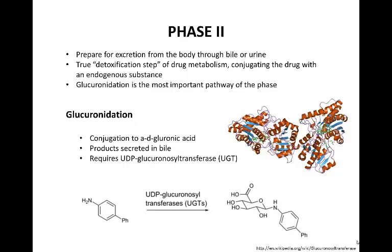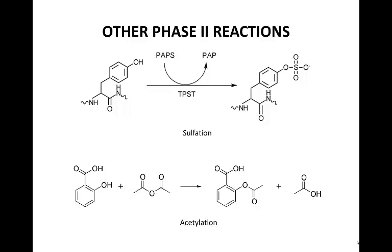Phase 2 reactions prepare the pharmaceutical compound for excretion from the body, mostly through bile or urine. It is considered the true detoxification step of metabolism, as it conjugates the drug to another substance to increase solubility. Glucuronidation, or conjugation to UDP-glucuronic acid, is the most important pathway for drug metabolism. This reaction involves UDP-glucuronosyltransferase, or UGT, and the products are primarily secreted through bile. Other common reactions are sulfation — a pathway for phenyls, select alcohols, amines, and thiols.